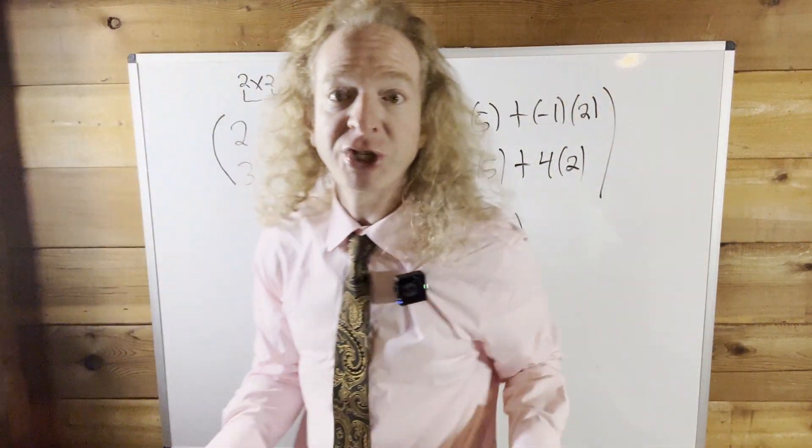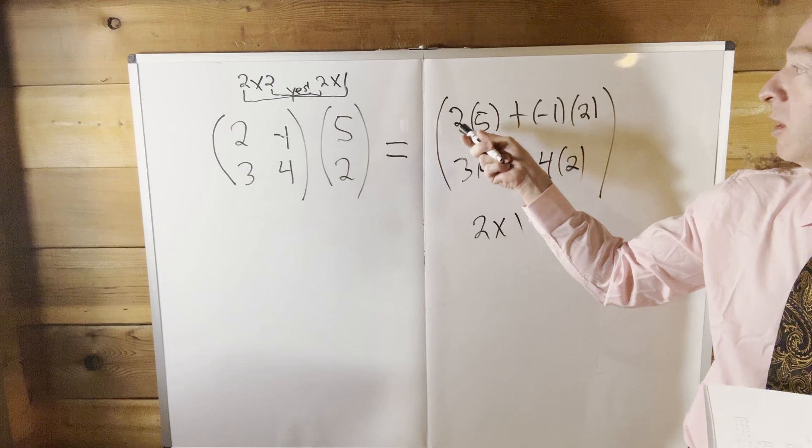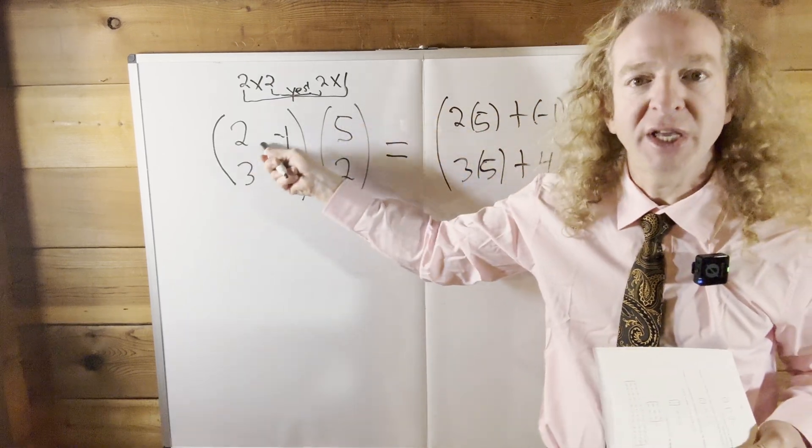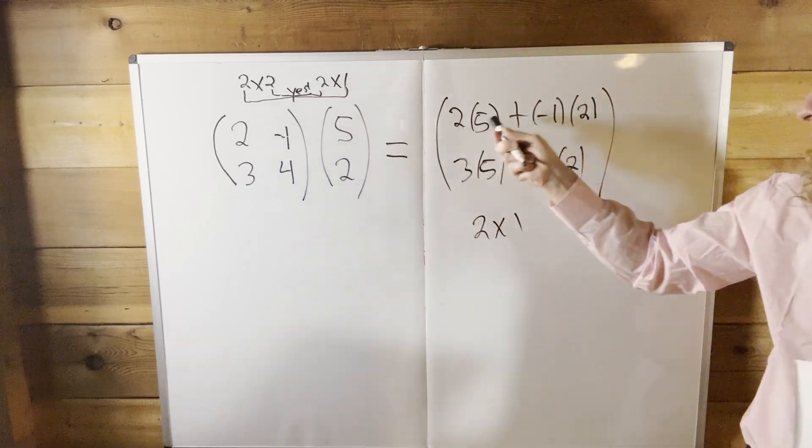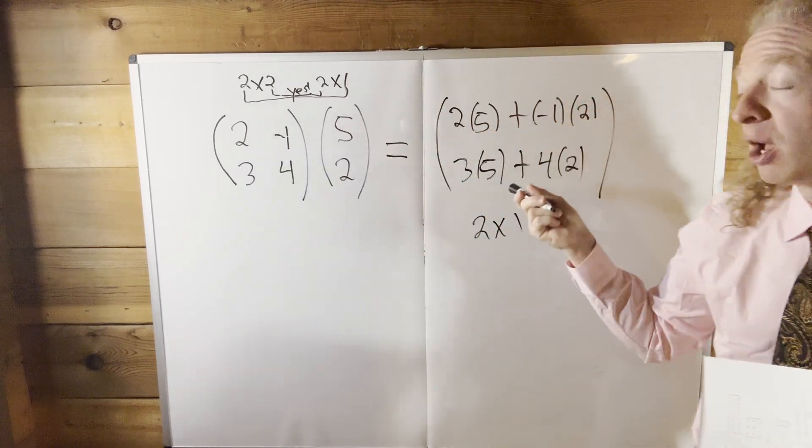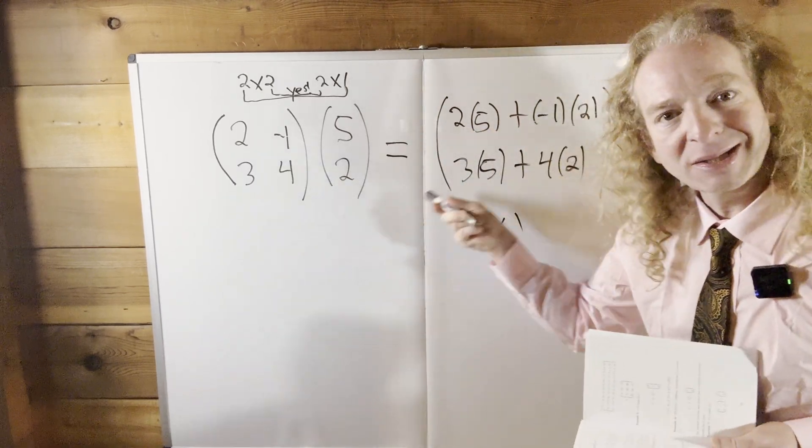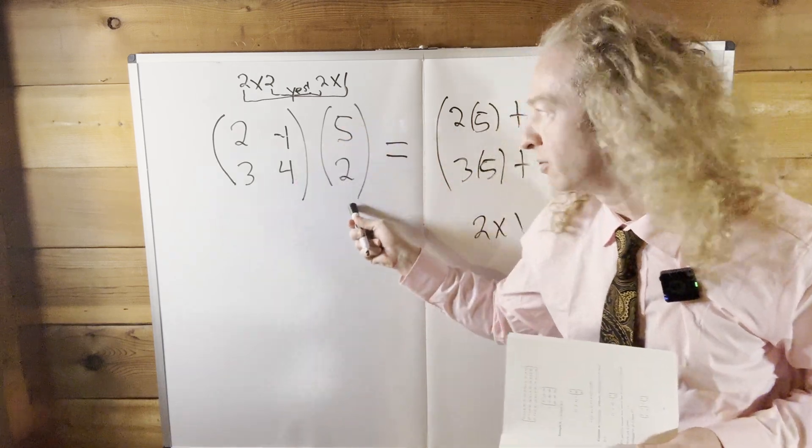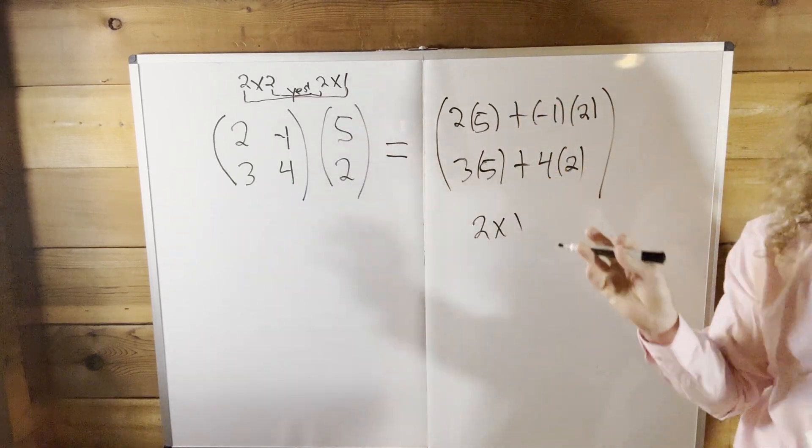So again, let's just double check that one more time. So we want the entry in the first row, first column. So two times five plus negative one times two. We want the entry in the second row, first column. So three times five plus four times two. And then there it is.